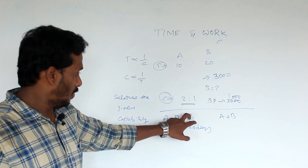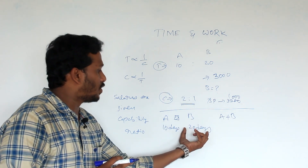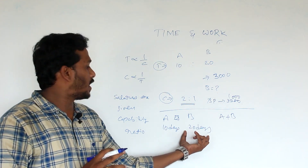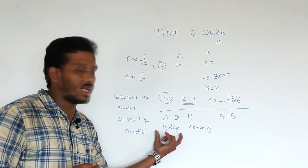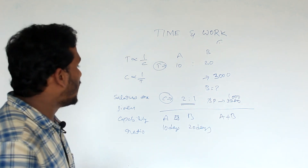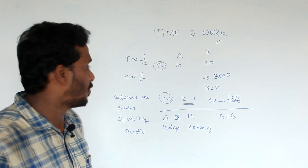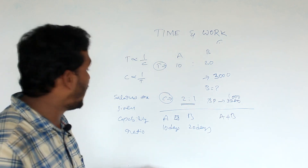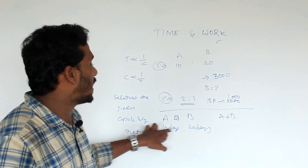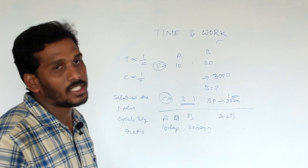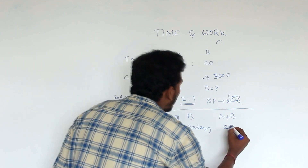To find total units of work: A completes in 10 days, B completes in 20 days. We divide the work into parts using LCM. LCM of 10 and 20 — the bigger number is 20, and 20 is a multiple of 10, so LCM is automatically 20. Therefore total work = 20 units or 20 parts. A does 2 units per day, B does 1 unit per day.